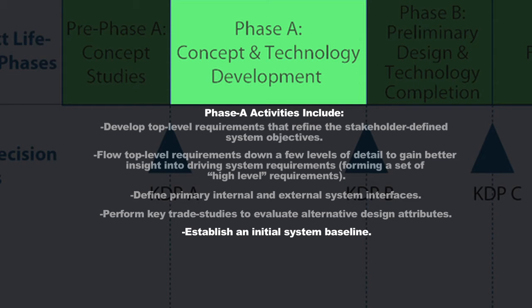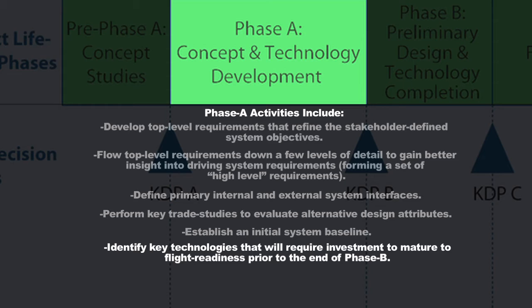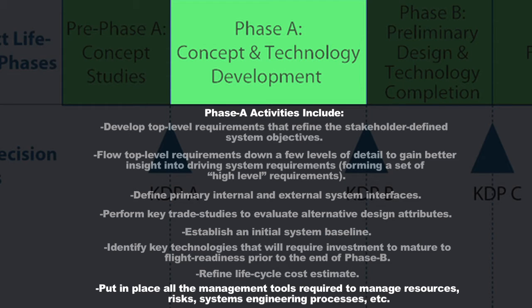You're also going to establish an initial system baseline, identify any key technologies that will require investment during Phases A and B to ensure they're ready for implementation, and refine your life cycle cost estimates so stakeholders understand the estimated total cost to complete the entire life cycle. You're going to put in place all your management tools to manage all your resources — money and schedule, as well as technical resources like power and mass, which you only have a certain amount of to allocate across the development team.